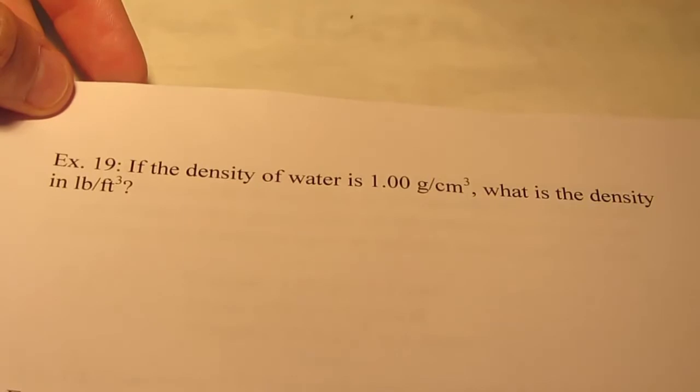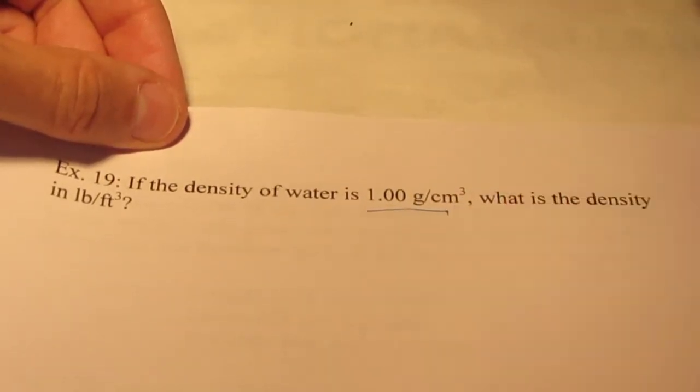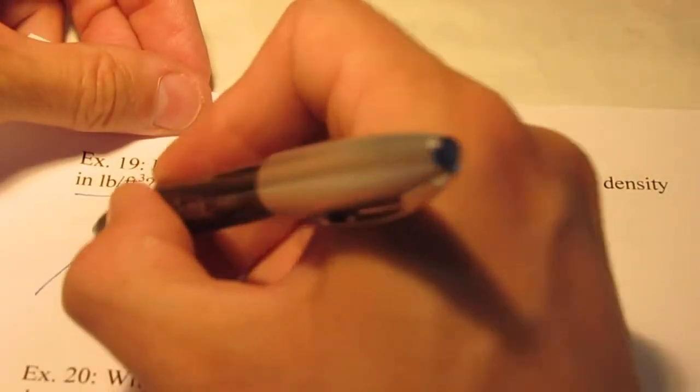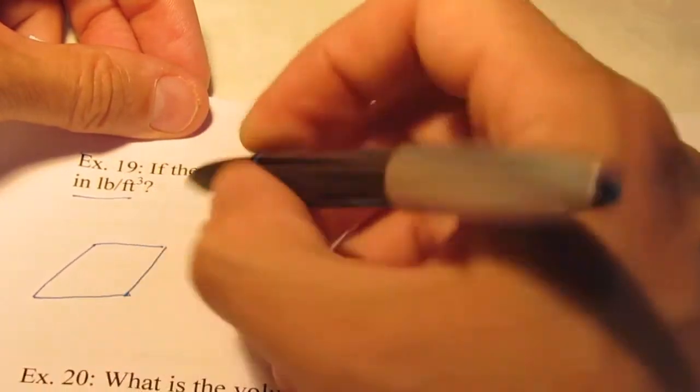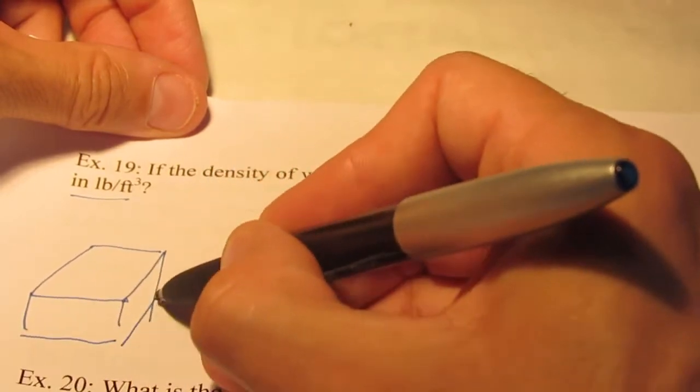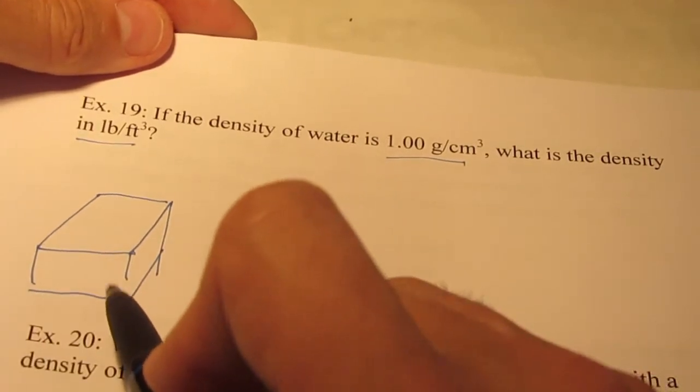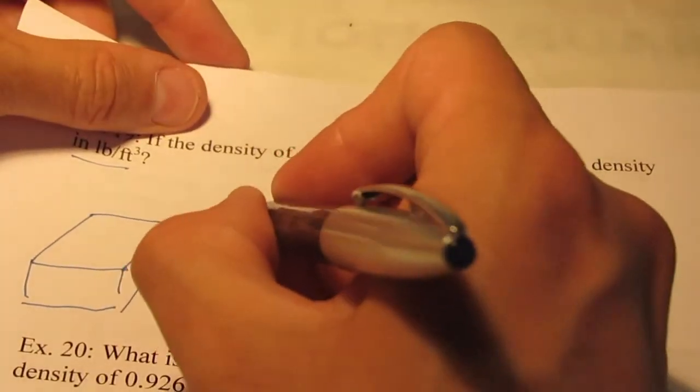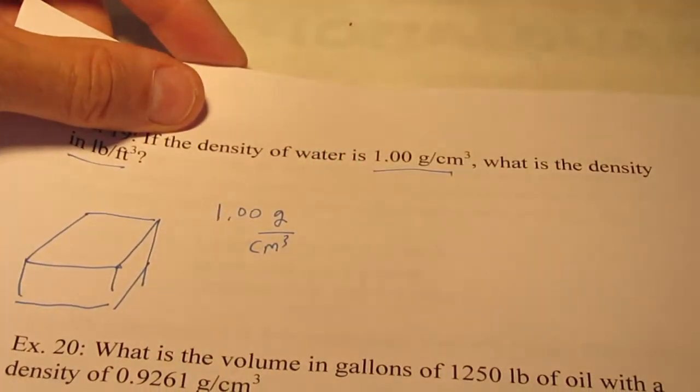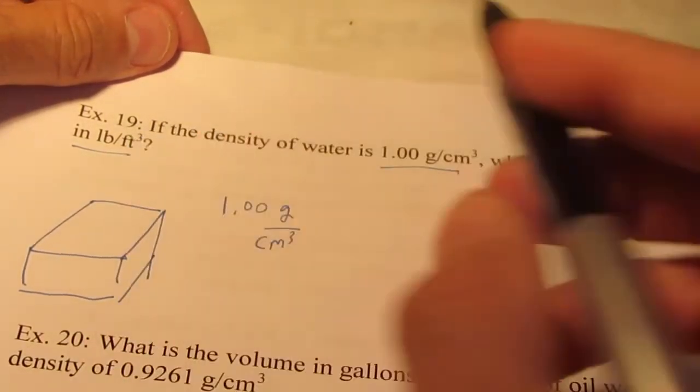Let's do another one. This is example 19 in your notes. If the density of water is 1 gram per cubic centimeter, what's the density in pounds per cubic foot? In other words, if I had a cubic foot of water, what would its weight be? Could you lift it up? Let's start with what I know: 1 gram per cubic centimeter. I need to get grams into pounds and cubic centimeters into cubic feet.